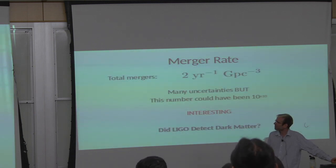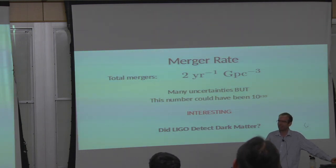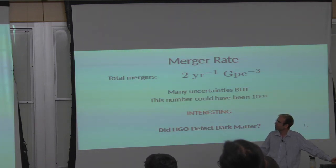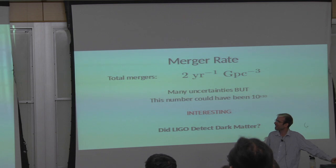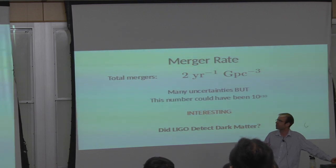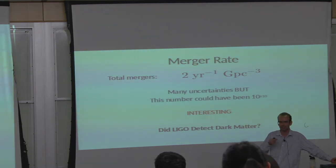Obviously that's not true — I would love a Nobel Prize, but that's not really true. The point is I made an order of magnitude estimate for the total number of mergers, and this number happened to be around 1. There are many uncertainties — small changes to my assumptions could get 10 or a half. But the point is that this number could have been 10 to the 10 or 10 to the minus 10 a priori. There's no reason it needed to be roughly 1 and match the LIGO observations. So this was and continues to be interesting.